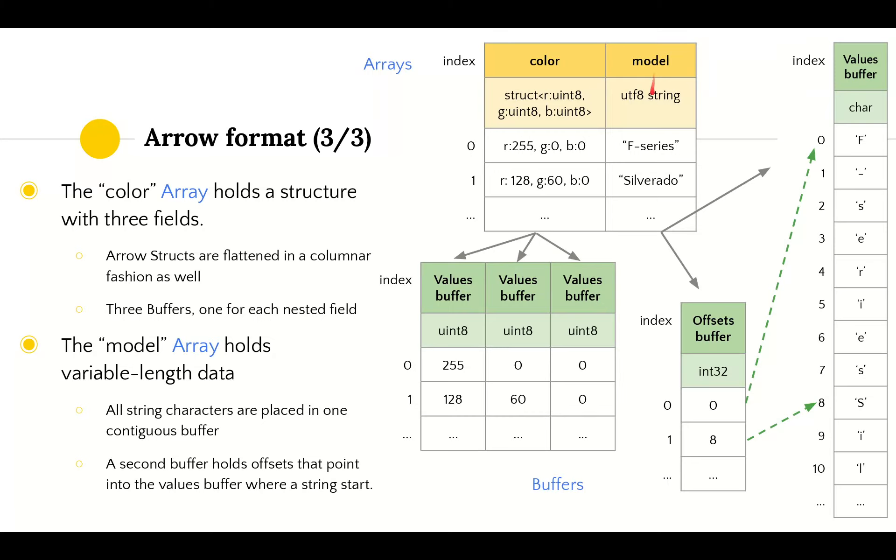A string is a variable-size data structure, which is harder to lay out in memory. For fixed-size data, to find data for a specific row, we multiply the size by the row index. But for strings in Arrow, we store the characters in one values buffer and point to the start of each string from a second buffer called the offsets buffer. The offsets in this buffer point to where a specific string starts in the values buffer. By checking the next offset and calculating the difference, we know the size of the string. Let's take a closer look on the next slide and compare it to our structure of arrays example where we didn't care about strings yet.